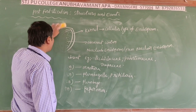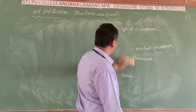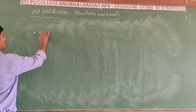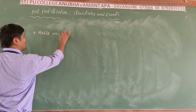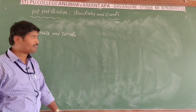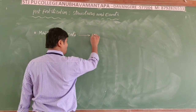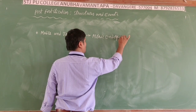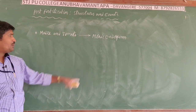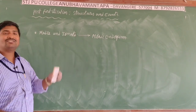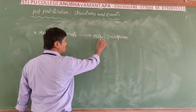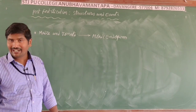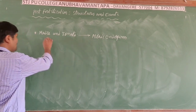Another special point is the mosaic endosperm. In mosaic endosperm, patches of different colors are present in the endosperm — that is, scattered colors are present. The best examples for mosaic endosperm are maize and tomato.